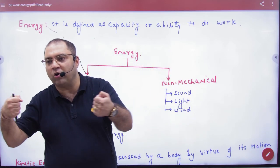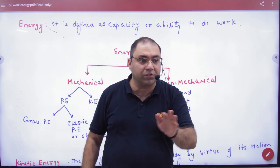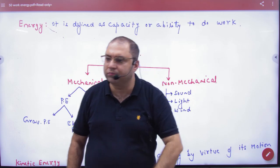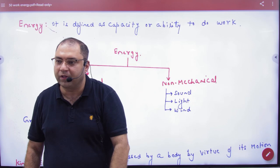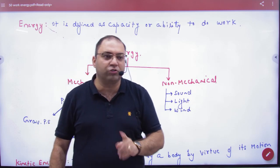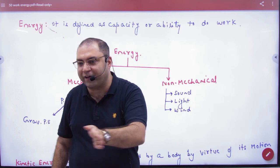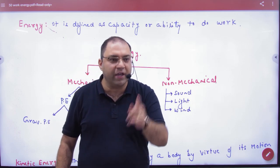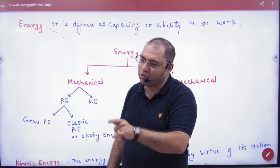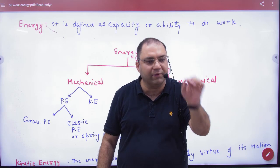Same with magnets: bring two north poles together against their repulsion — work done is required. You can take any example. Whenever you do work done against nature, that energy gets stored as potential energy. There are many types of potential energy in the world. We are only going to study two this month — gravitational and elastic — because we are doing mechanics.